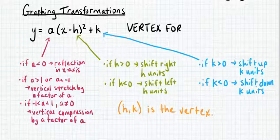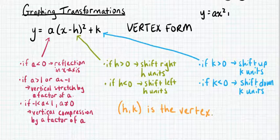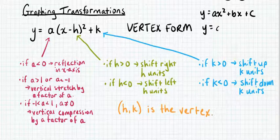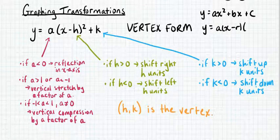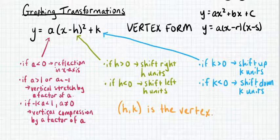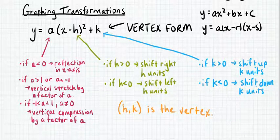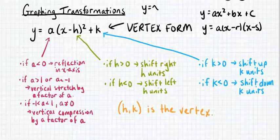In this course, we've already looked at what standard form looks like. Standard form is written as y equals ax squared plus bx plus c. We've also looked at factored form, which is y equals a times x minus r times x minus s, where r and s are the x-intercepts of that quadratic relation. So here we're talking about a third form — vertex form. Each of these values in vertex form tells us something about how the relation has changed from our base graph of y equals x squared.